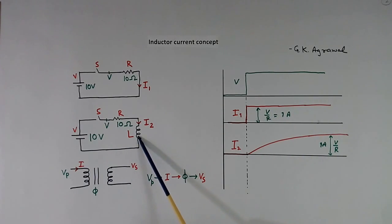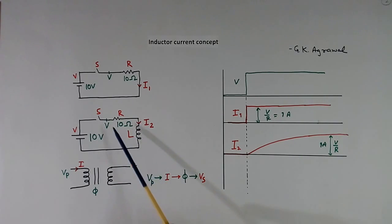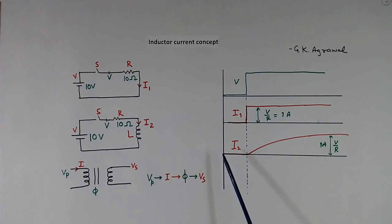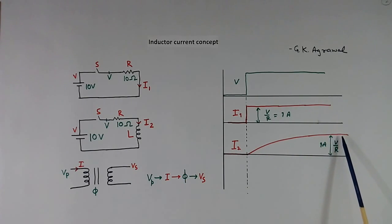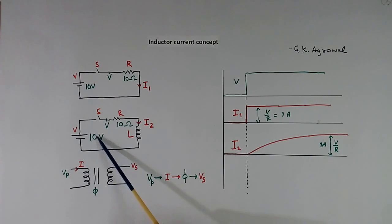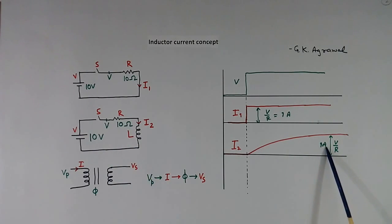But if an inductor is also connected, then because of the inductor, when we close the switch, current will not flow immediately. Current will rise slowly, and after some time it will reach the full value equal to V divided by R. If it is 10V battery and 10 ohm resistor, then 10 by 10 gives 1A.